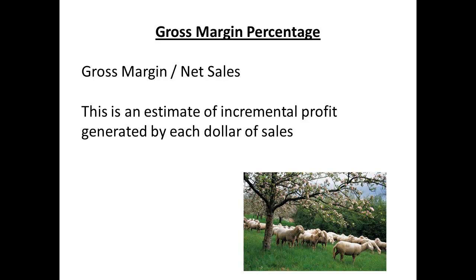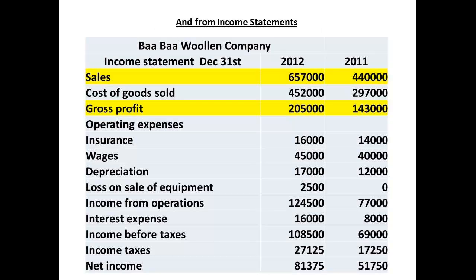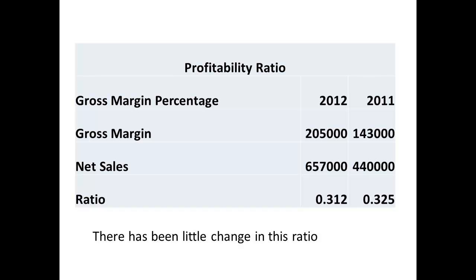The gross margin percentage is determined by dividing the gross margin by the net sales. It represents an estimate of the incremental profit generated by each dollar of sales. All the information required for gross margin percentage is obtained from the income statements, with the relevant figures shown highlighted. The gross margin percentage was 0.312 in 2012 and 0.325 in 2011. There has been very little change in this ratio.